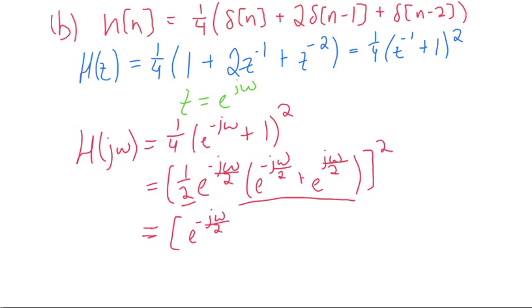Which then equals e^(-jω) times cosine squared of ω/2.